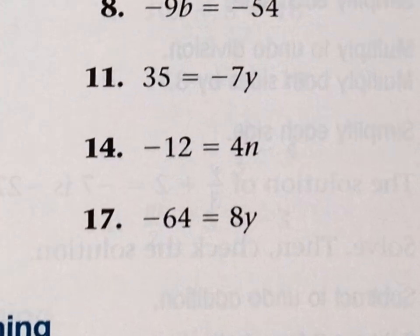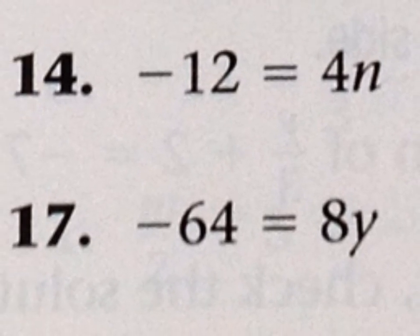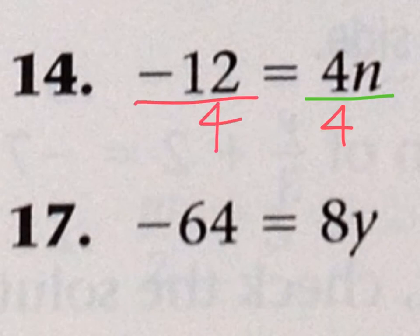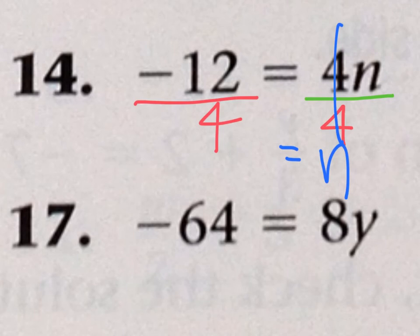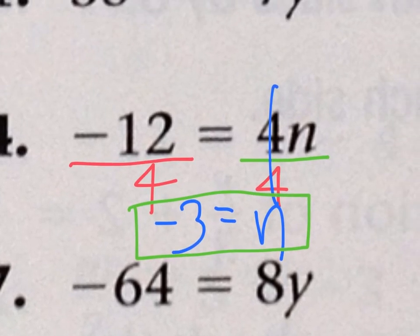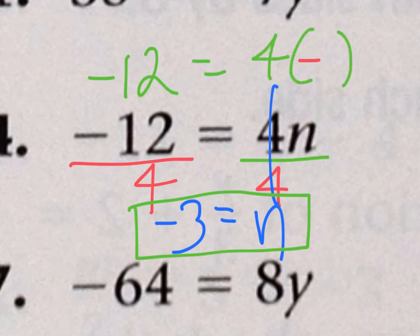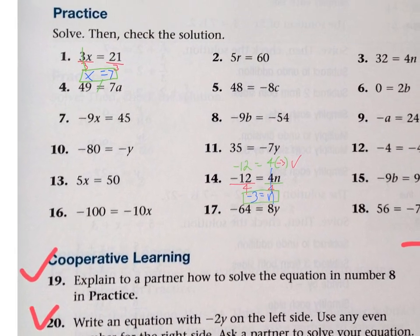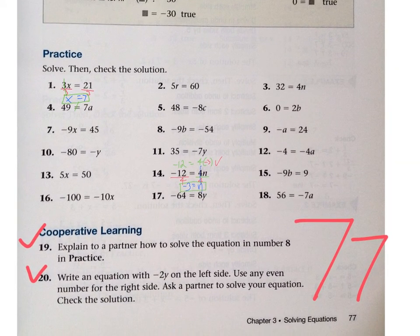Let's try number 14. It says negative 12 equals 4n. We've got to get the variable by itself, so let's divide both sides by 4, because this is 4 times n and the opposite of multiplication is division. The 4s cancel out, so all we're left with is n. And negative 12 divided by 4 equals negative 3. To check our solution: negative 12 equals 4 times negative 3 — does that give us negative 12? Yes, it sure does. Let's do a few more together — I can't wait to see us mastering solving equations using division.